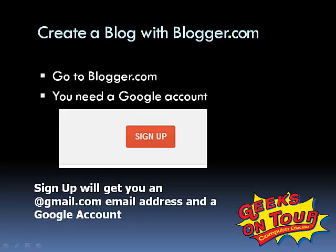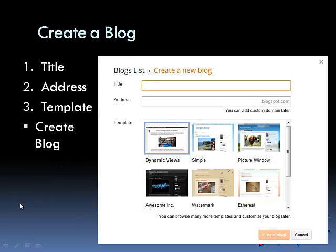Hi, this is Chris Gould with Geeks on Tour, and this video is going to show you how to create a blog using blogger.com. Blogger.com is owned by Google, so step one is you need a Google account. If you don't have one, there's a big red button that says sign up, and there's another video on that. If you have a Google account, you just sign in, and then it is as easy as filling out one simple form. You give your blog a title, an address, you pick a template, and you click the button Create Blog. You now have a blog. That's all there is to it. So let's do it.